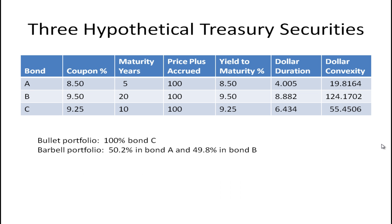Let's take a look at an example from Fabozzi's Bond Markets Analysis and Strategy. There are three different bonds: A, B, and C. Bond A has an 8.5% coupon and matures in five years. The price plus accrued interest is 100, so it's selling for its maturity value, meaning its yield to maturity equals its coupon rate. That's true for all three bonds, and the dollar duration and dollar convexity have already been computed.